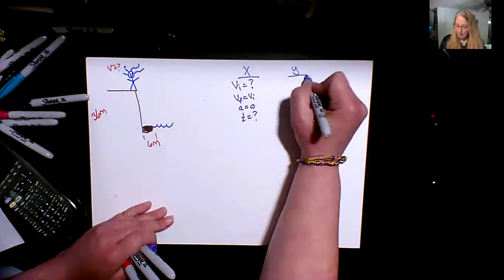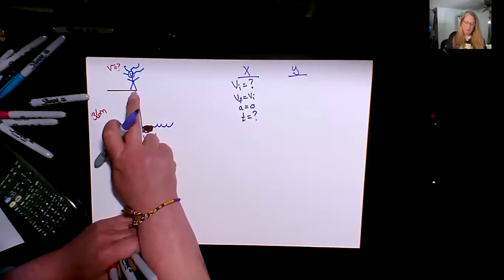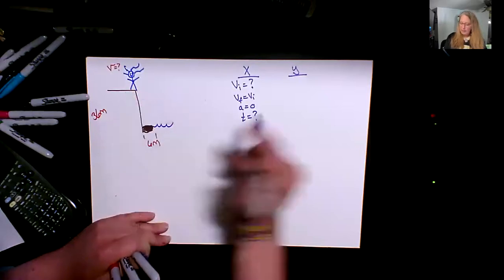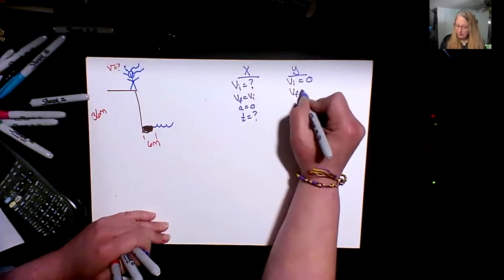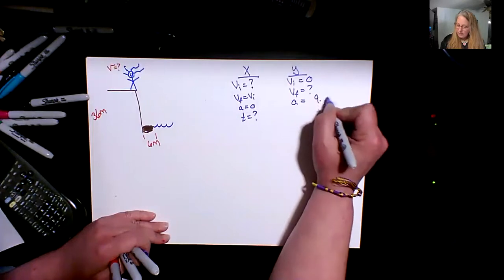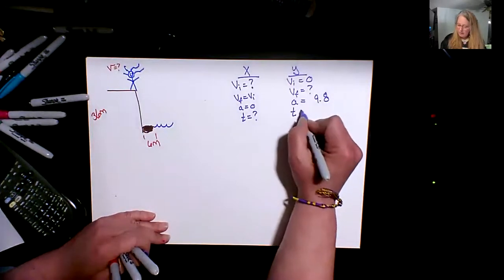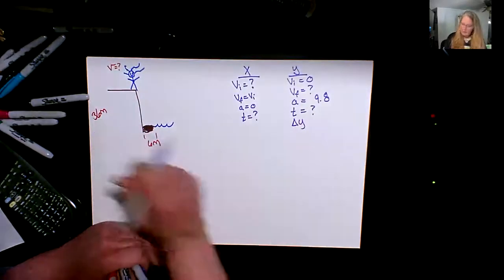So let's see why. Again, whenever we take something starting from the top of like a cliff or a table or anything, when it's starting with the surface supporting it, its initial velocity is zero. We don't know its final velocity. We know its acceleration is 9.8. Let's decide if that's going to be positive or negative. And t, we don't know, but delta y we do, 36 meters.